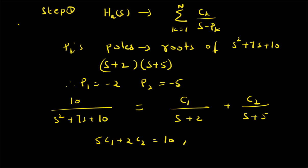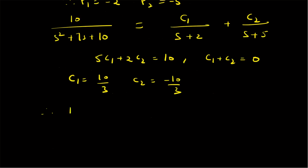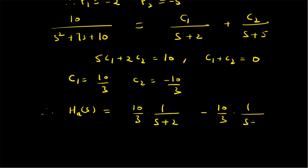Comparing the coefficients of s gives c1 + c2 = 0, so c2 = -c1. Substituting into the first equation gives c1 = 10/3 and c2 = -10/3. Therefore H_a(s) = (10/3) · [1/(s+2)] - (10/3) · [1/(s+5)].